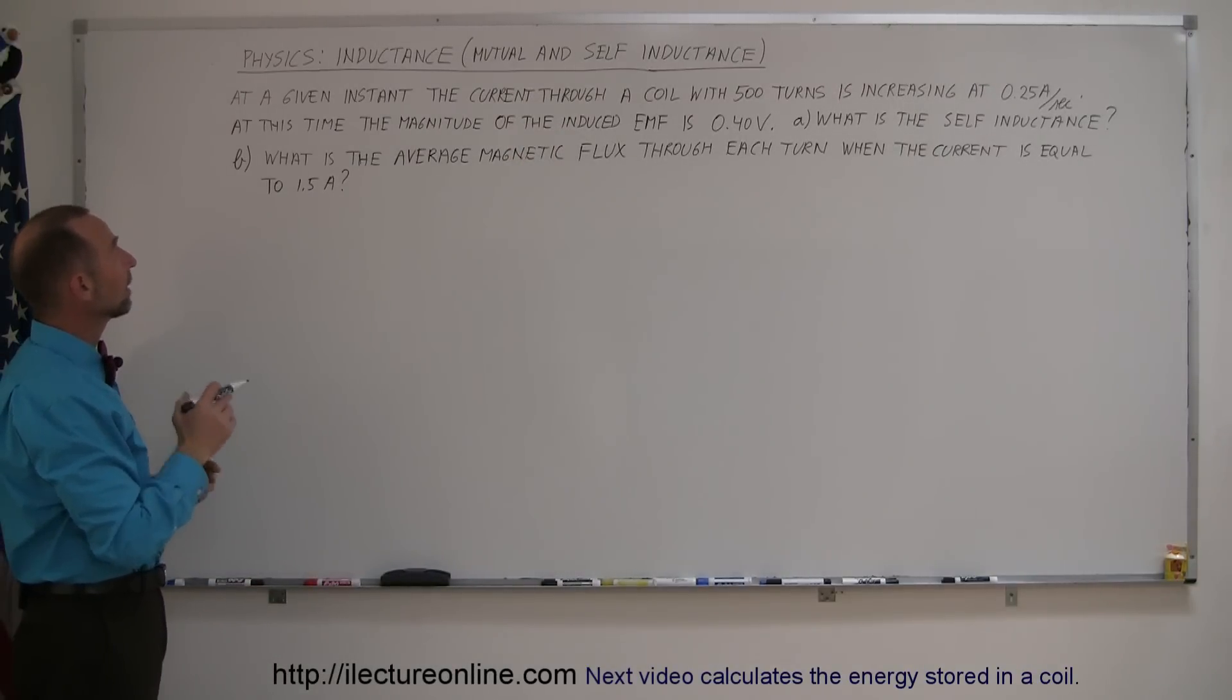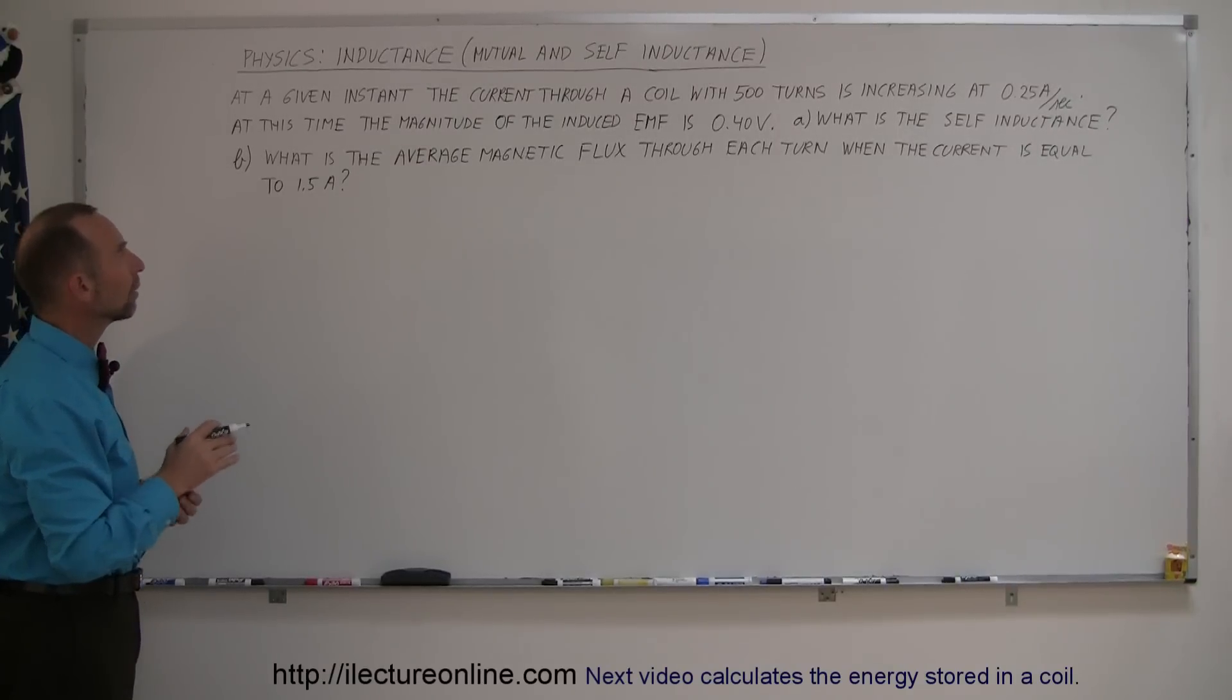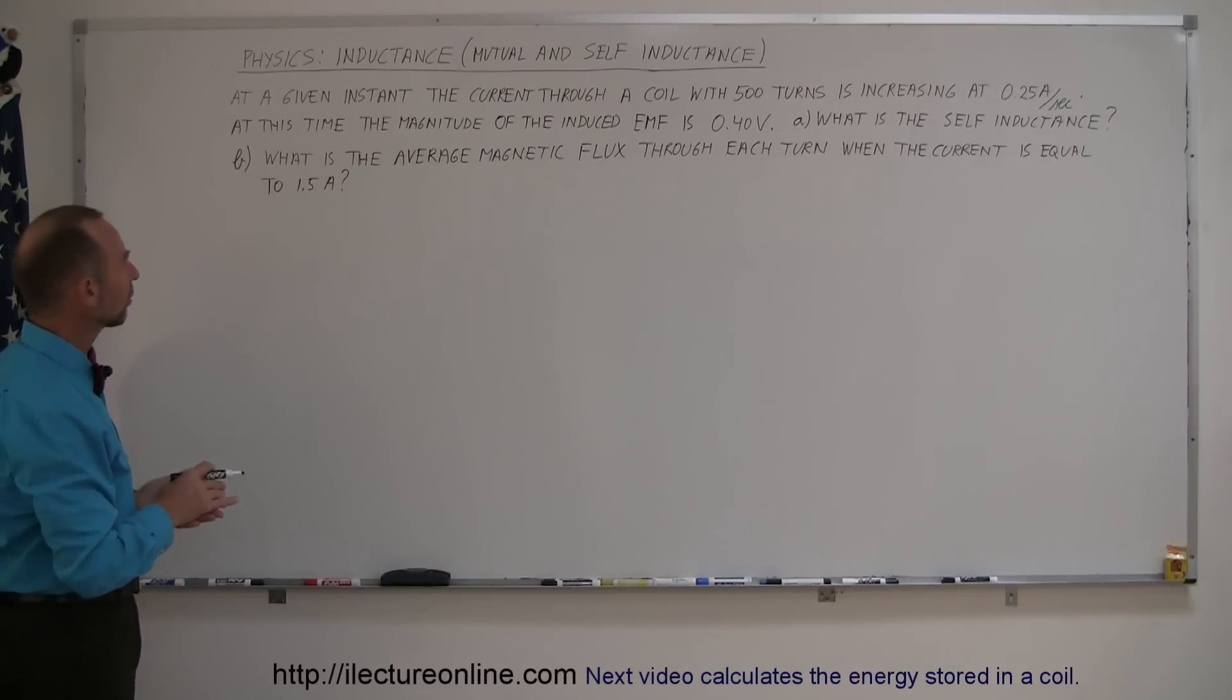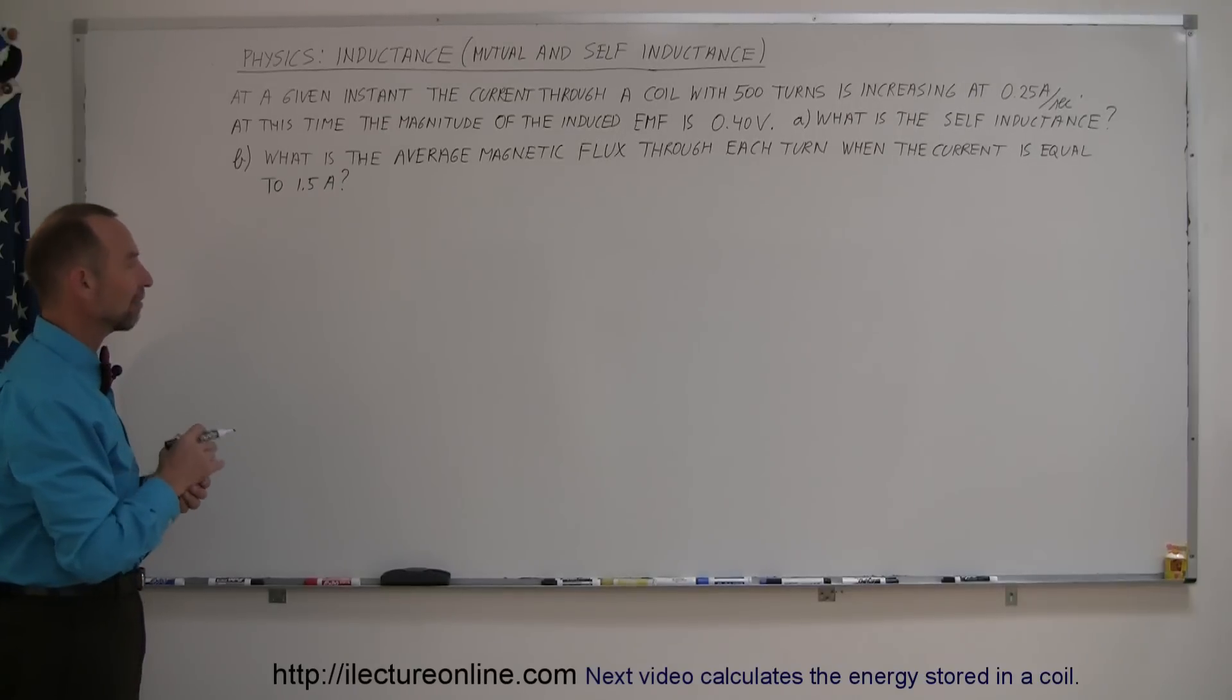It says here that at a given instant, the current through a coil with 500 turns is increasing at 0.25 amps per second or a quarter amp per second. At this time, the magnitude of the induced EMF is 0.4 volts. A, what is the self-inductance? And B, what is the average magnetic flux through each turn when the current is equal to one and a half amps?